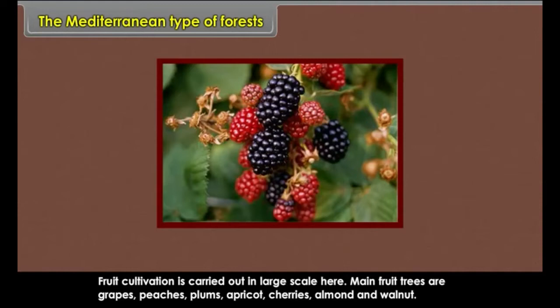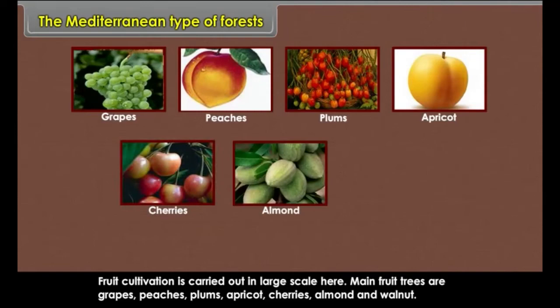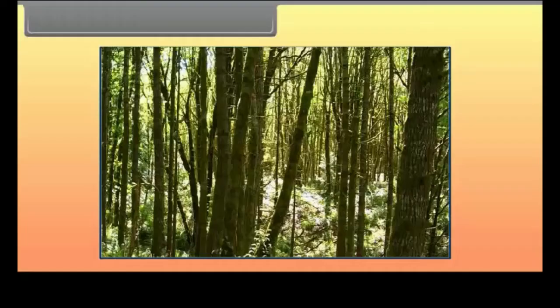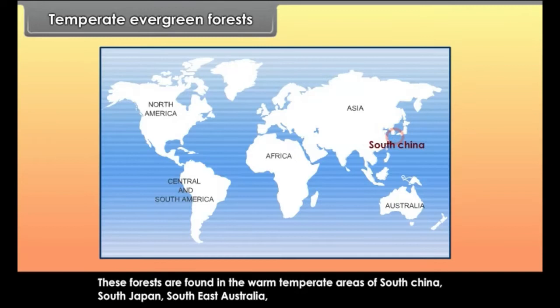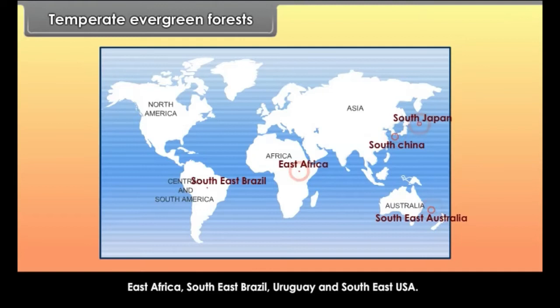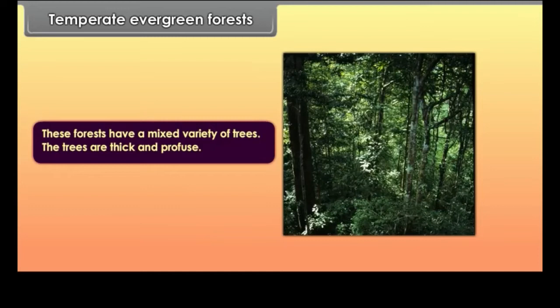Temperate evergreen forests are found in the warm temperate areas of South China, South Japan, Southeast Australia, East Africa, Southeast Brazil, Uruguay and Southeast USA. Characteristics: These forests have a mixed variety of trees that are thick and profuse. Important species of trees are oak, pine, wattle, eucalyptus, walnut and camphor.